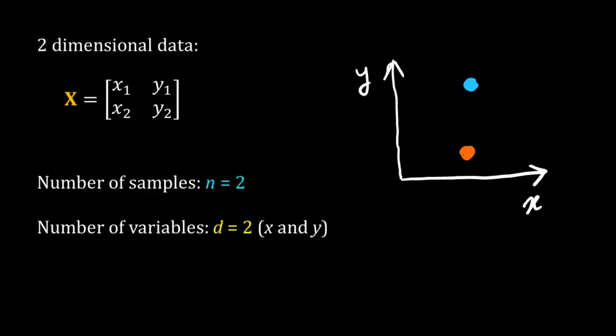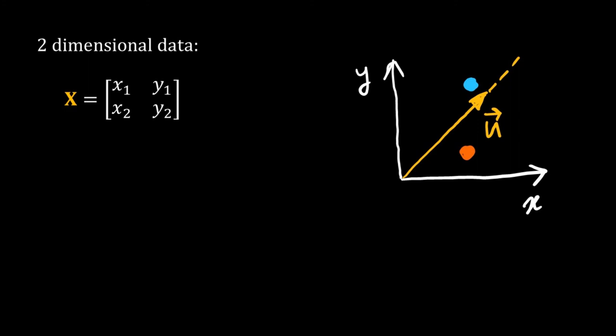I have a two-dimensional system with two variables X and Y and so I have two samples. Capital X is my data matrix. The first sample is X1, Y1. I want to project this data on a vector u. Suppose this arrow is the u vector and that orange circle is the orange triangle.